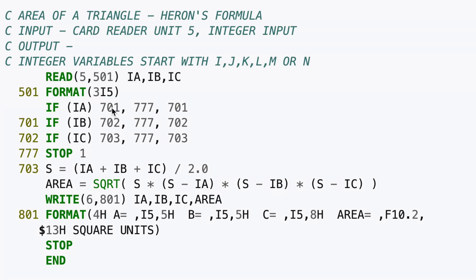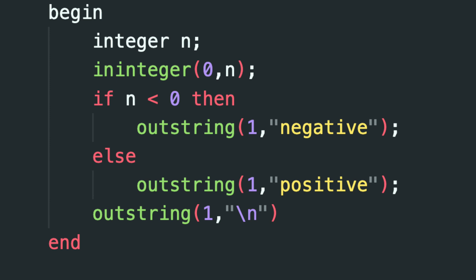If you watched my video about the history of semicolons, you already know that ALGOL developers introduced many core concepts we still use today, including else-if statements. You might point out that early languages like Fortran in the 1950s used conditional statements, but they usually did so with conditional go-to's or arithmetic if statements.